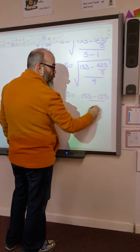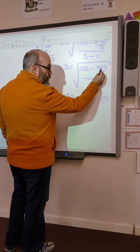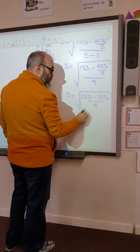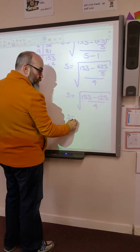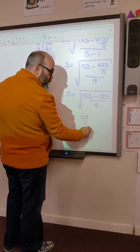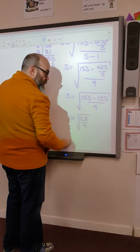Let's scroll the board down a little. So this is going to give me s. The first thing we work out is the 25 squared, so that's going to be 153 minus 625 over 5, all over 4.